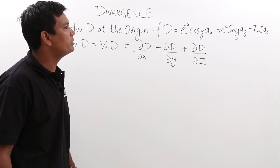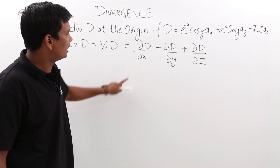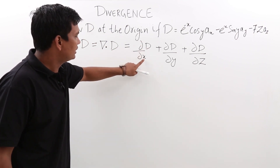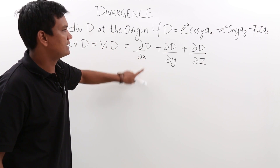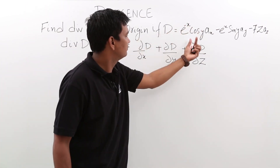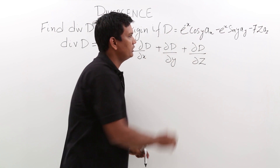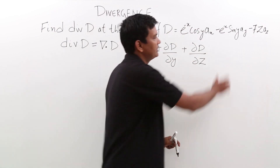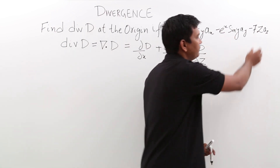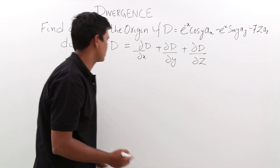Now, what would be my D field? We just substitute D. The D component along the x-axis is one component only, along the y we have another component only, and along the z we have only the z component. So we will substitute those values.